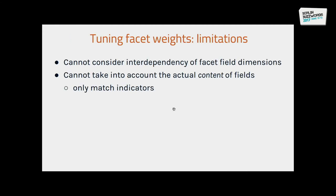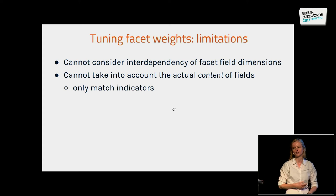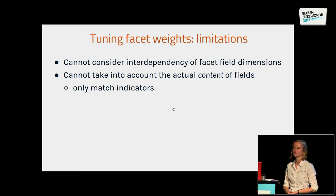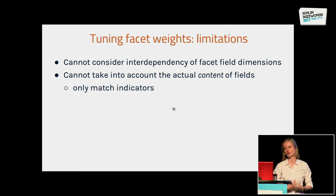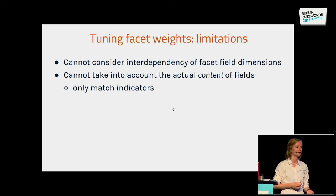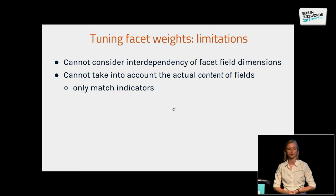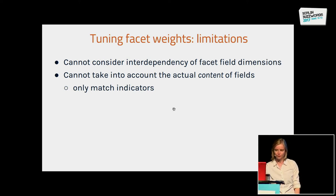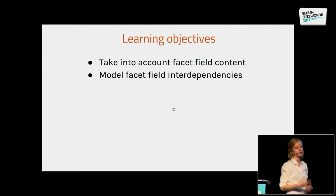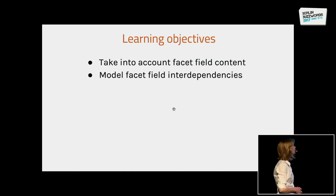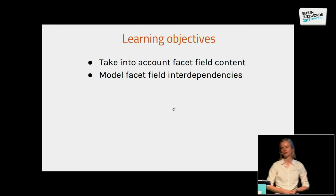But this obviously has some limitations. You cannot consider the interdependency of facet field dimensions, and you cannot take into account the actual content of fields — only a match indicator. So we cannot learn a rule like: if I search for the skill Java, I also want people who have Java in their job title field to be ranked higher. That's not possible with this approach. Our learning objectives for Learning to Rank were to take into account facet field content and also model facet field interdependencies.